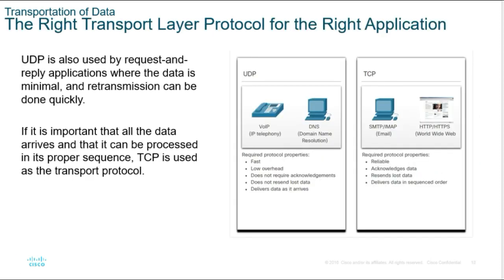What types of applications are suitable for UDP or TCP? Due to their different characteristics, we look at application layer protocol categories suitable for each transport layer. Examples for UDP include Voice over IP and also Domain Name System or DNS. The type of data used by these protocols requires transmission that is fast, has low overhead, does not require acknowledgement, does not resend lost data, and also delivers data as it arrives.